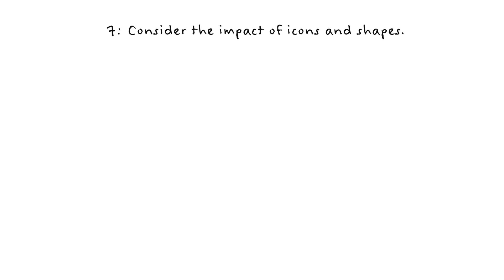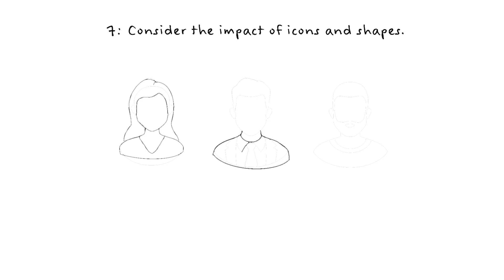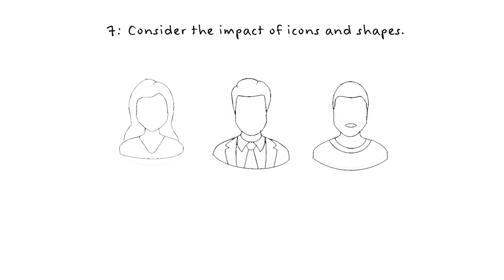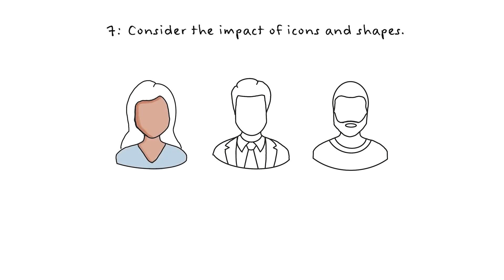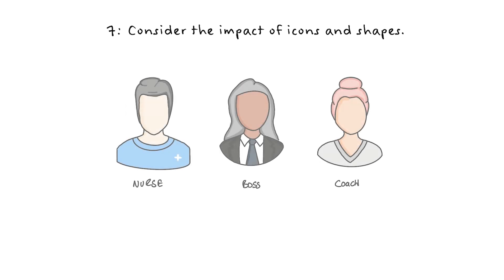7. Consider the impact of icons and shapes. Icons, by their very nature, are intended to convey broad meanings, but they can perpetuate harmful and offensive stereotypes if used carelessly. These elements must be chosen with care. It's essential that any and all stereotypical, discriminatory and racist imagery is avoided. It's also important that images depict people as empowered and dignified. It's never acceptable to use imagery that depicts people as helpless victims.